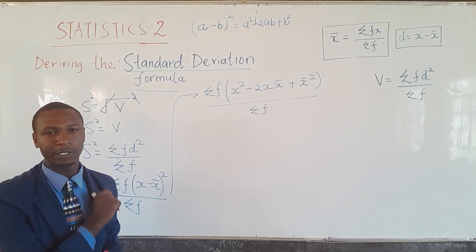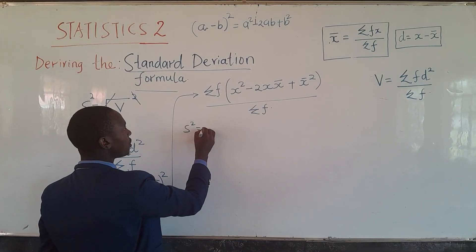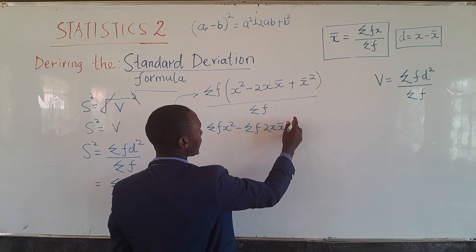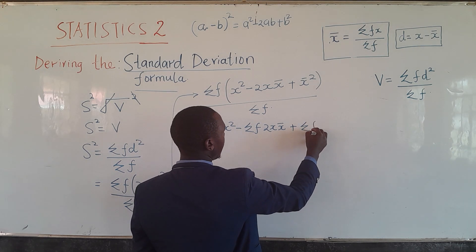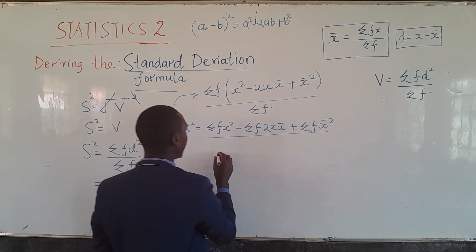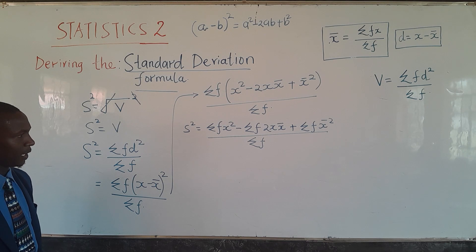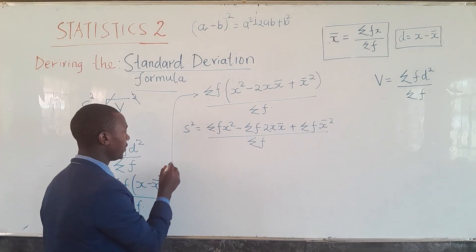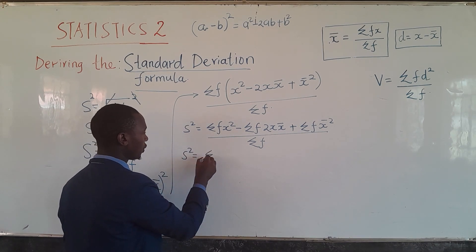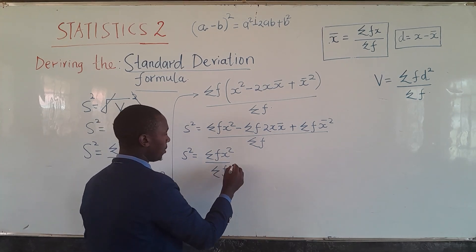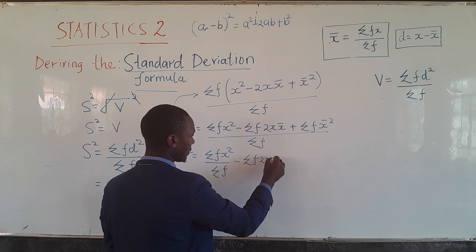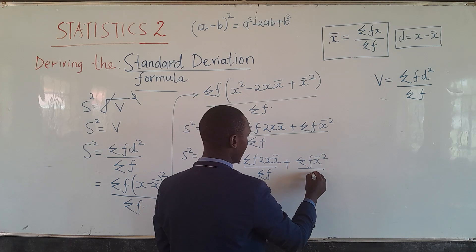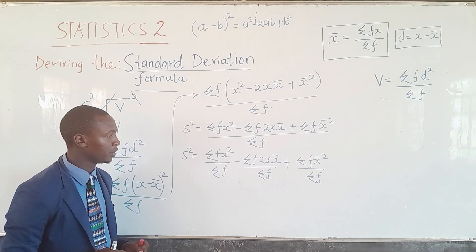Expanding the brackets, s² equals summation of fx² minus summation of f·2x·x-bar plus summation of f·x-bar², all divided by summation of f. Observing the formula closely, we have a common denominator, so we can write each term separately: summation of fx²/Σf minus summation of f·2x·x-bar/Σf plus summation of f·x-bar²/Σf.